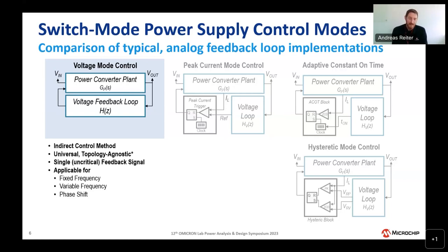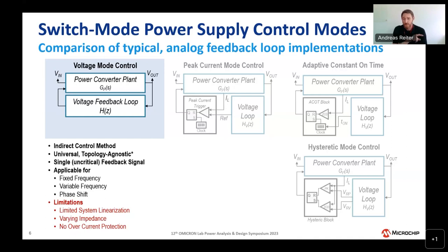Voltage mode uses a single, uncritical feedback signal — cheap and easy to implement, applicable for fixed frequency, variable frequency, and phase-shifted commutation. The limitation is that system linearization doesn't work well: we allow resonances to occur. The resonant bump results in a drop in impedance at the resonant frequency, distorting the desired linear control system. A complex conjugate pole at resonance acts like two real poles — losing 180 degrees of phase instantly at that frequency, making the system unstable by default. The more efficient the supply, the more unstable it gets.